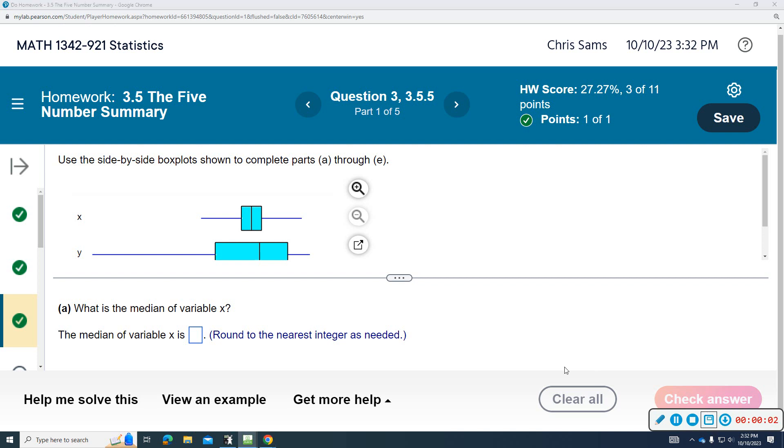Alright, so question number three, we have five parts. It says use the side-by-side box plots shown to complete parts A through E.